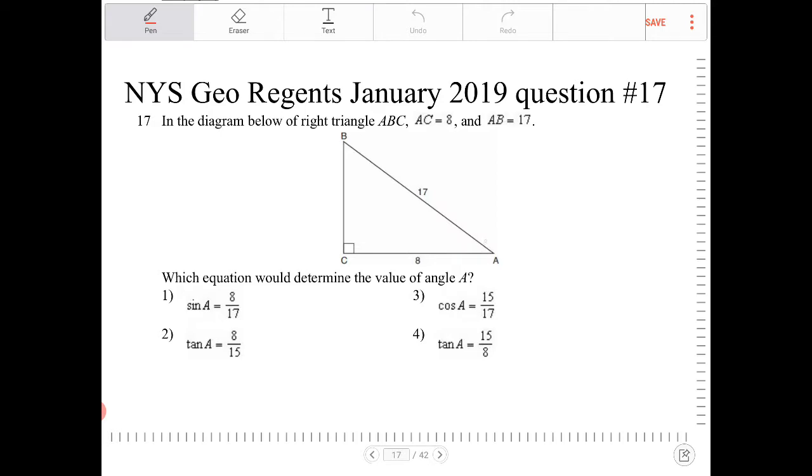So angle A here, for side length 8 and 17, 8 is adjacent to angle A and 17 is the hypotenuse. That would give me a cosine ratio. So cosine of A should equal 8 over 17.